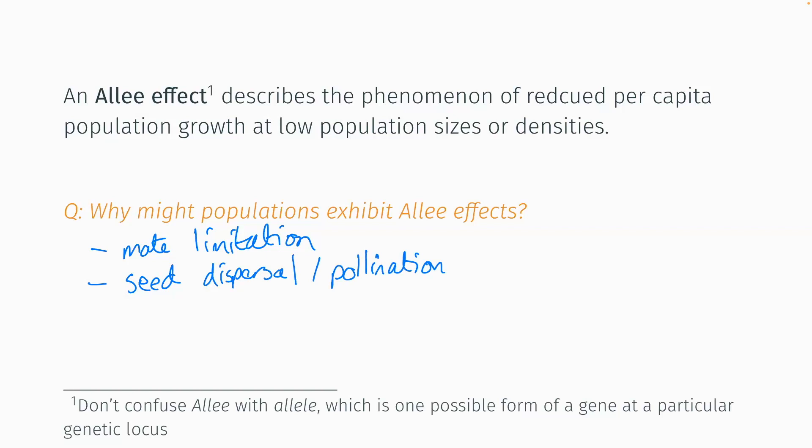Species that live in groups provide another example. Lots of prey species live in social groups — think of herds of buffalo. If those groups get smaller and smaller, then if a predator attacks, the herding effect is less effective and they're more likely to be predated. Group size effects related to predation work in the other direction too: if you've got a pack of lions or wolves and their population size decreases, the pack will probably become less effective. There are lots of different biological reasons why, at lower population densities, the growth rate might be lower.